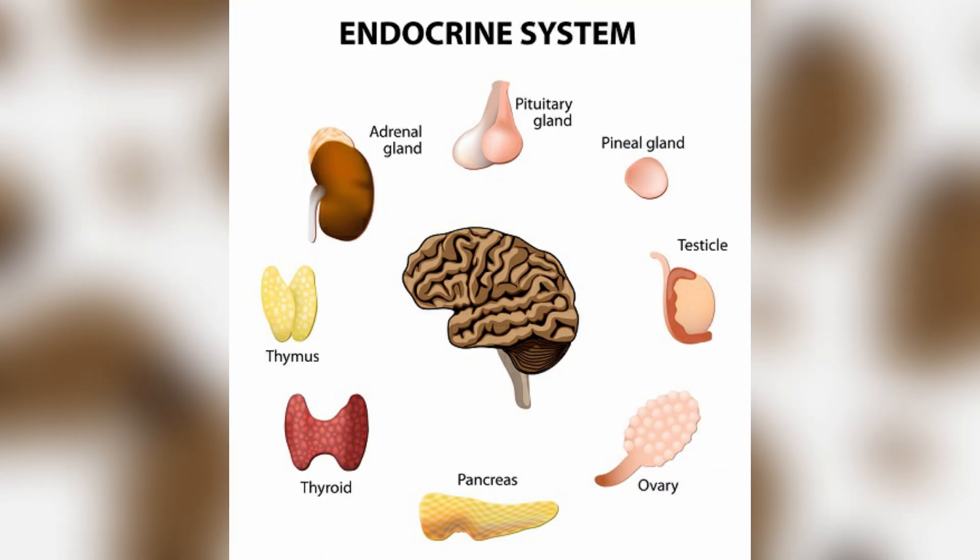What is endocrine? Endocrine glands include the hypothalamus, pituitary, thyroid, parathyroid gland, adrenals, pancreas, ovaries, testes, and pineal.